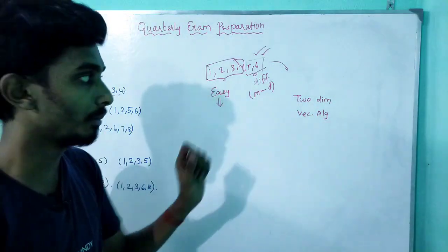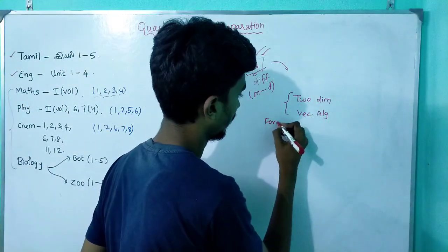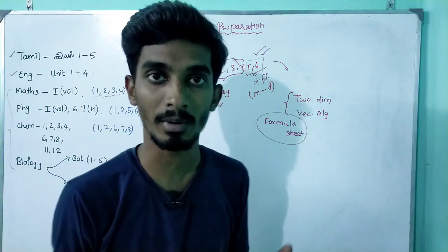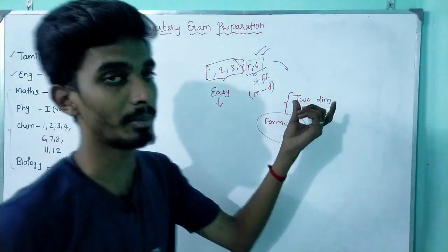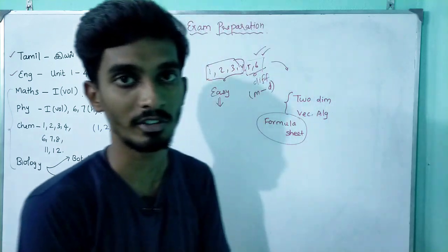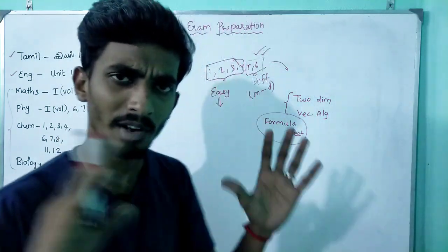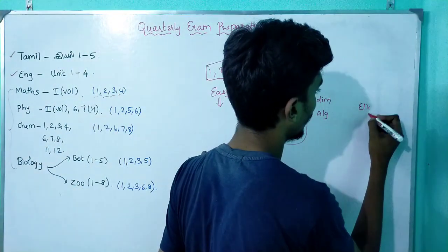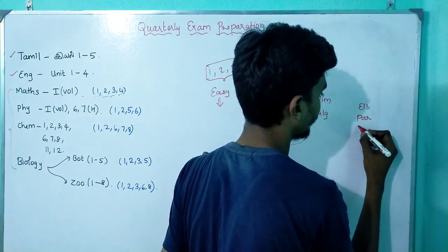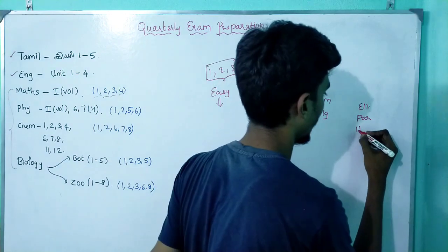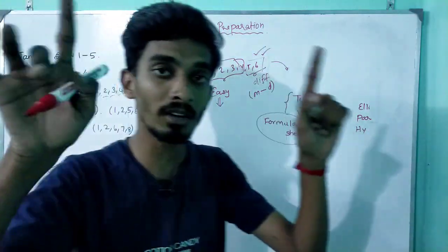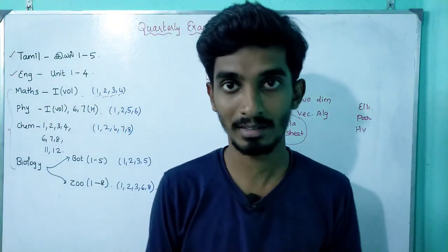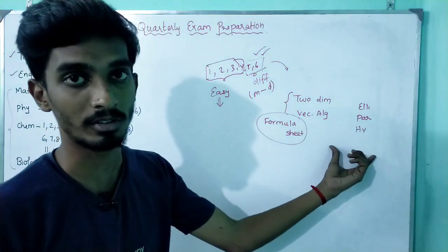For chapters 5 and 6, you have to prepare a formula sheet first — that is very important. In chapter 5, the 5.2 section covers conic sections: parabola, ellipse, and hyperbola. For each of these three, there is a table with columns for focus, latus rectum, and vertices. Learn the formulas first.